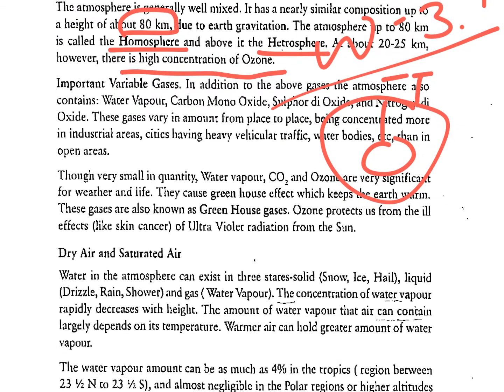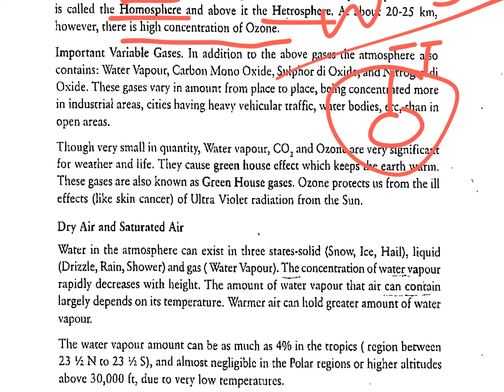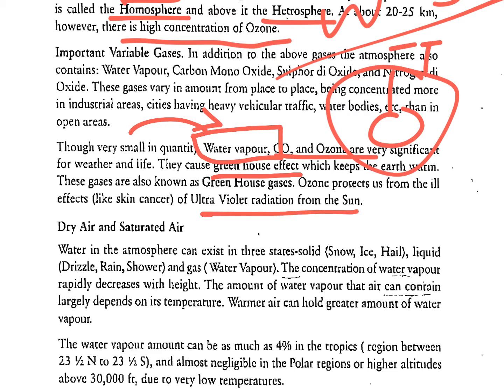Though very small in quantity, water vapour, carbon dioxide, and ozone are very significant for weather and life. They cause the greenhouse effect which keeps the Earth warm. These are important for MCQs — the greenhouse gases are carbon dioxide, ozone, and water vapour. Remember to include water vapour, as it is commonly overlooked. Ozone also protects us from the ill effects of ultraviolet radiation from the sun.